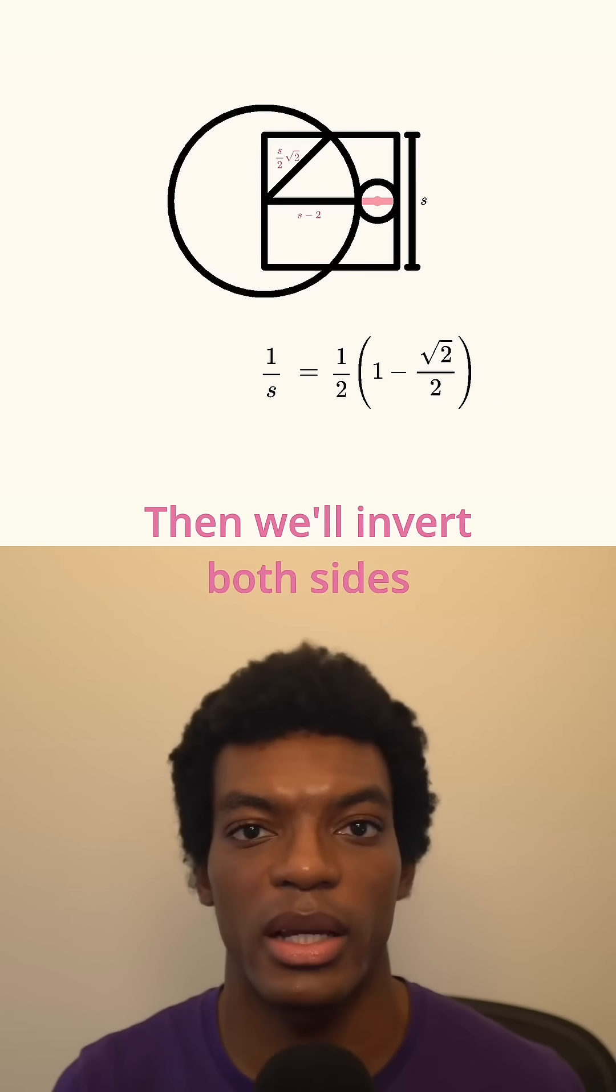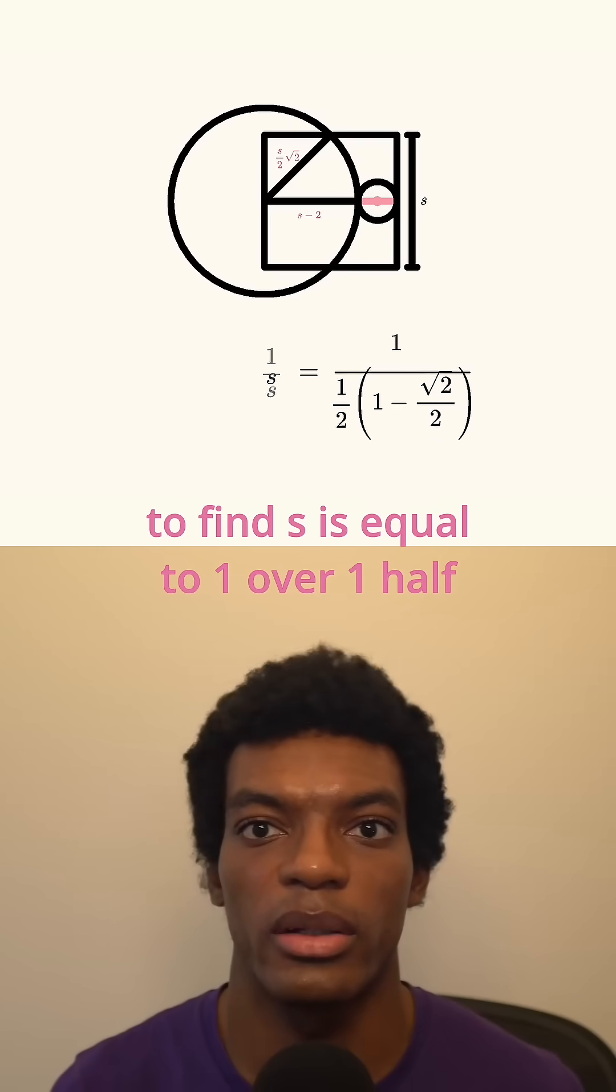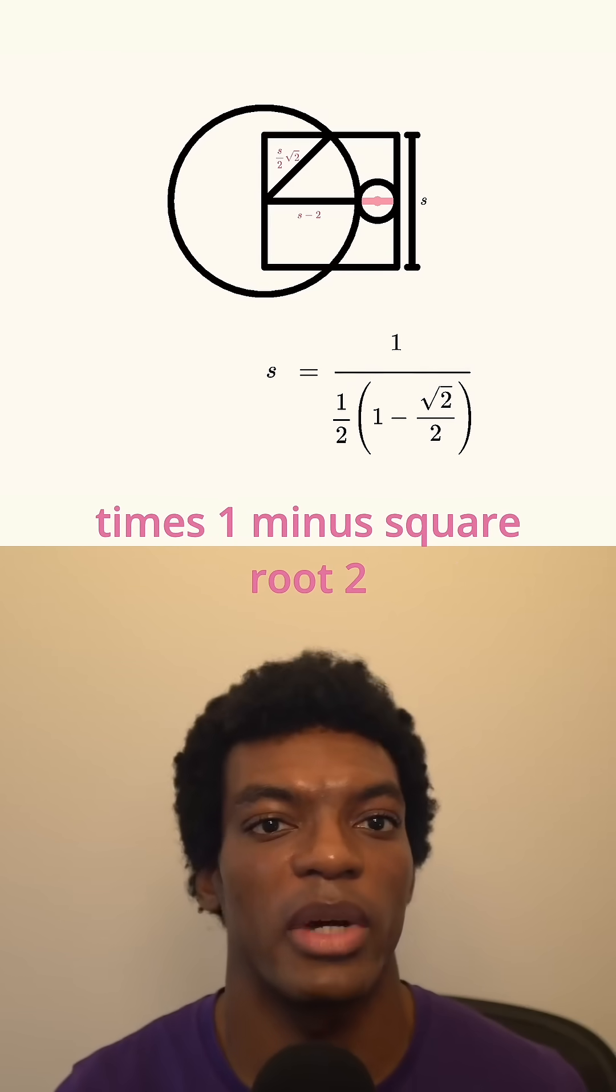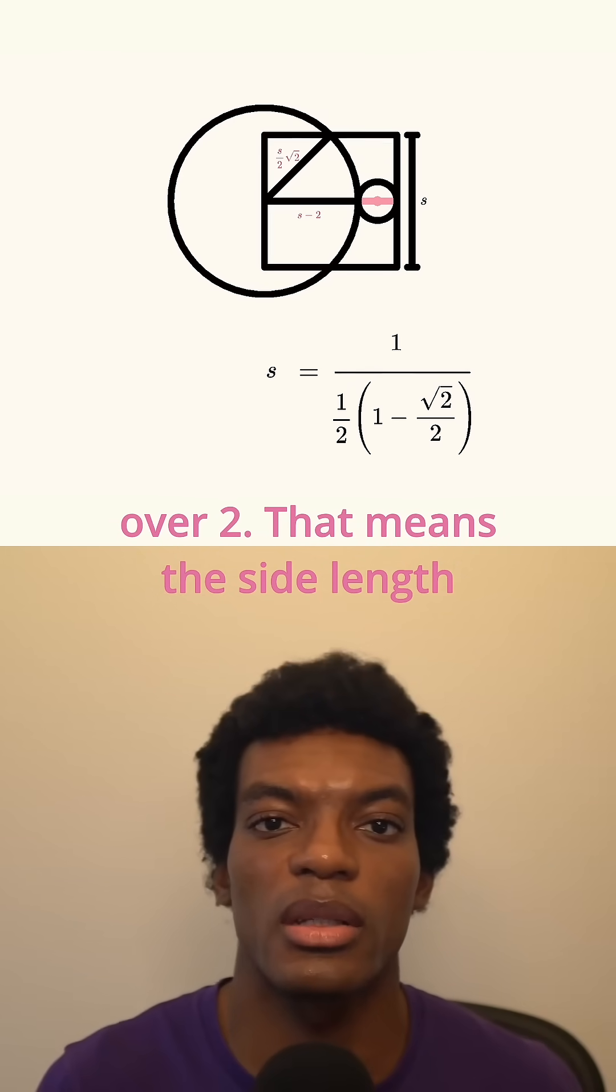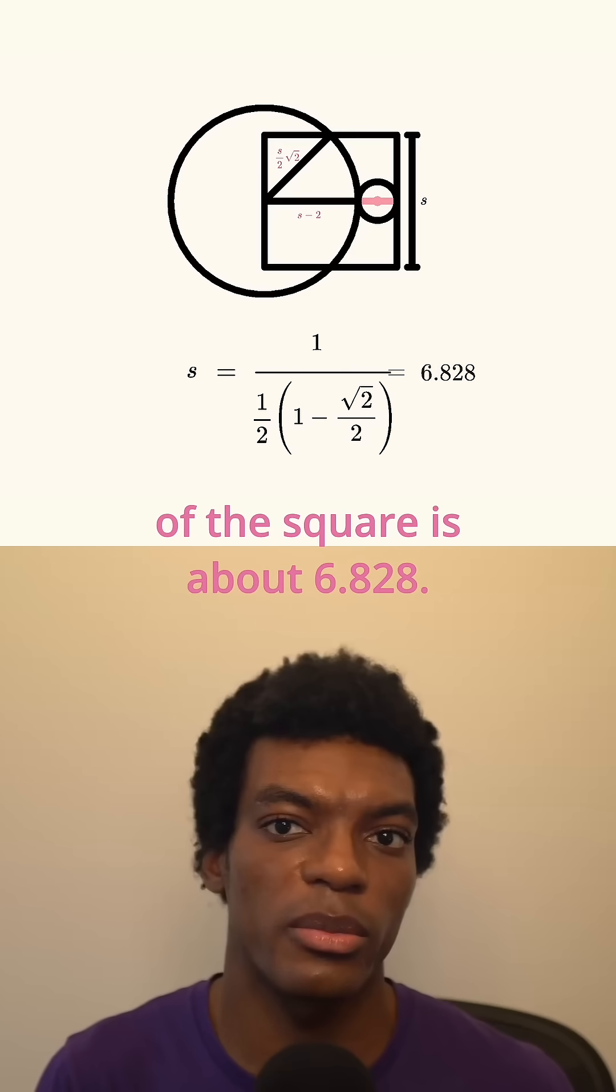Then we'll invert both sides to find S is equal to 1 over 1 half times 1 minus square root 2 over 2. That means the side length of the square is about 6.828.